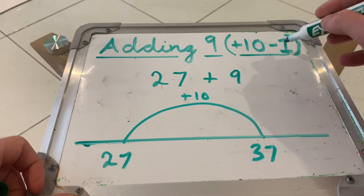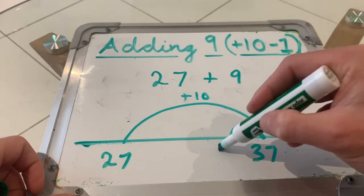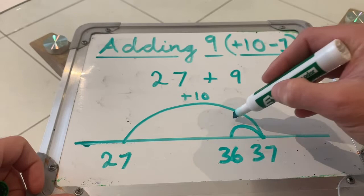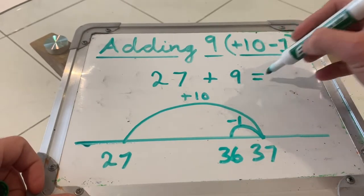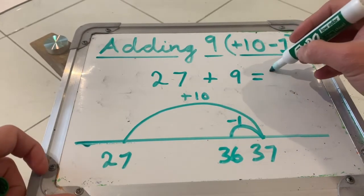But then I need to count one back to make 36. So take one. So 27 plus 9 is 36.